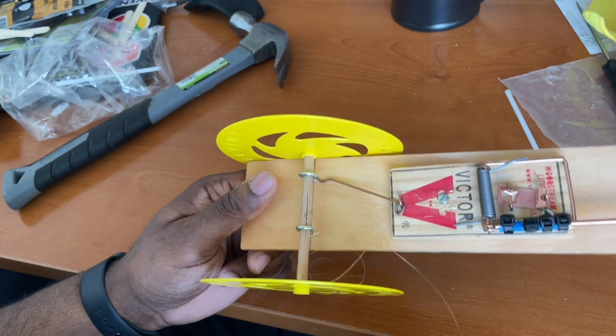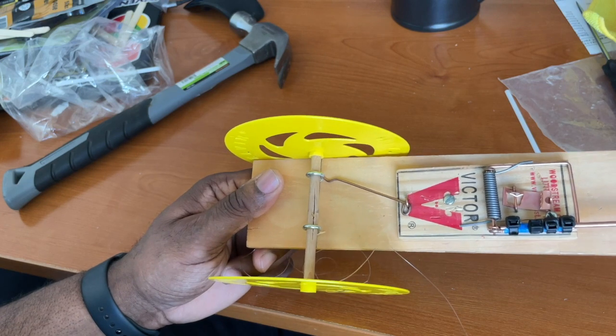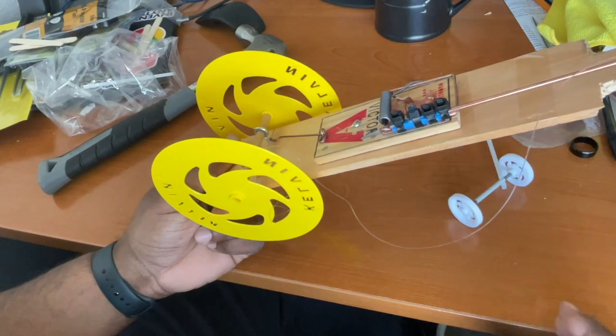So the problem you're going to have to solve then is how to make it let go. There are a couple ways to do it. But again, engineering is about solving problems. Let's see what you come up with. I'm going to put these front wheels back on and we'll give it a test run. Stay tuned.